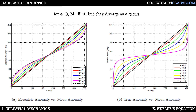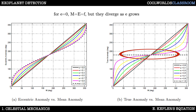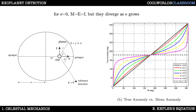Having done all this, we can now plot the relationship between all three angles. For circular orbits when e = 0, f equals E equals M — they're all the same angle. But as we go to higher eccentricities these lines diverge. Looking at the right-hand plot, the pink line for e = 0.9 shows that the planet spends a lot of time at a true anomaly close to 180°. Since f = 180° corresponds to apoapsis, the planet just kind of hangs around at apoapsis barely moving — another consequence of Kepler's second law.